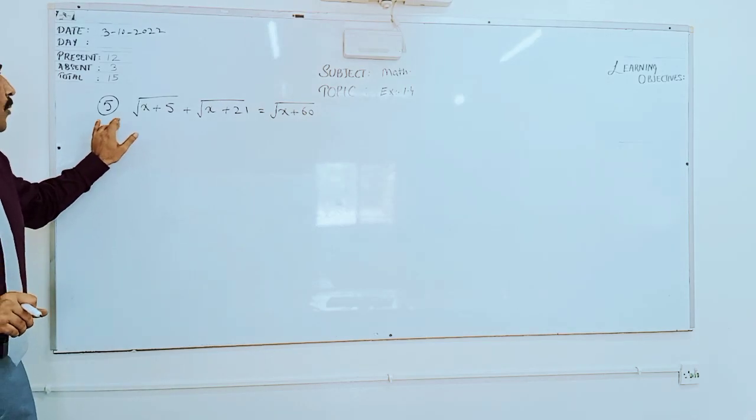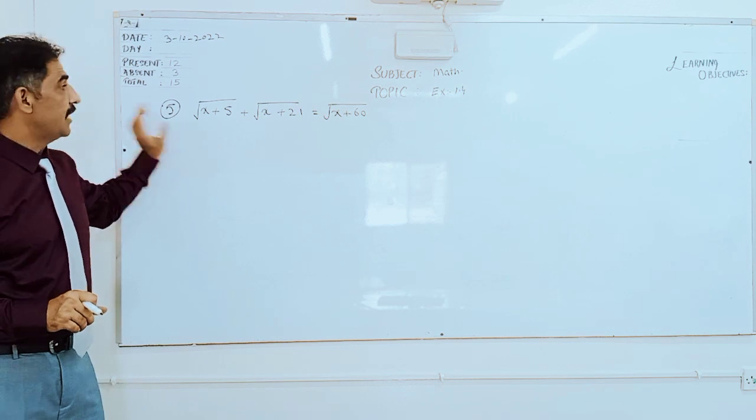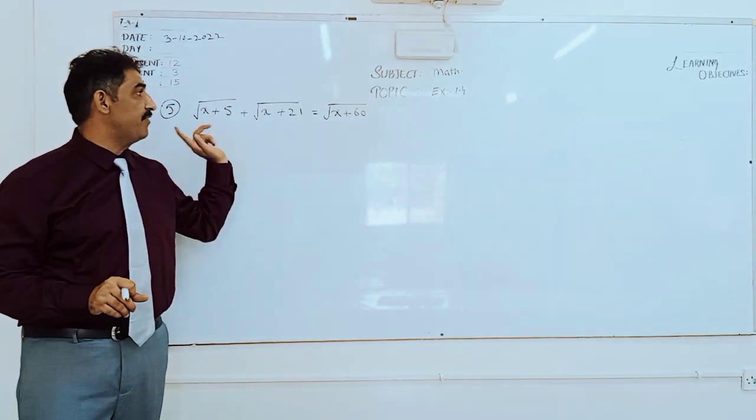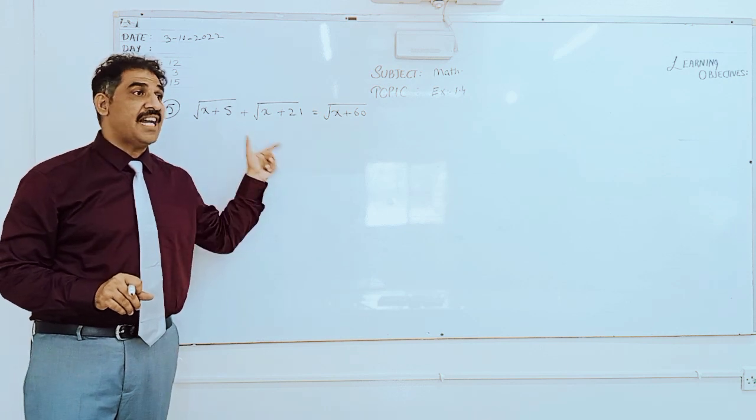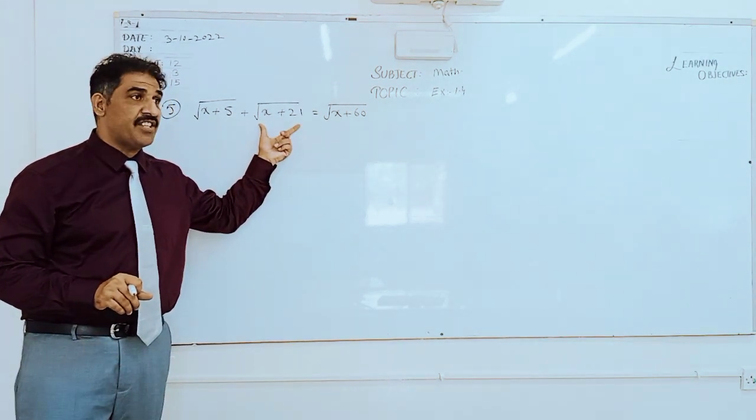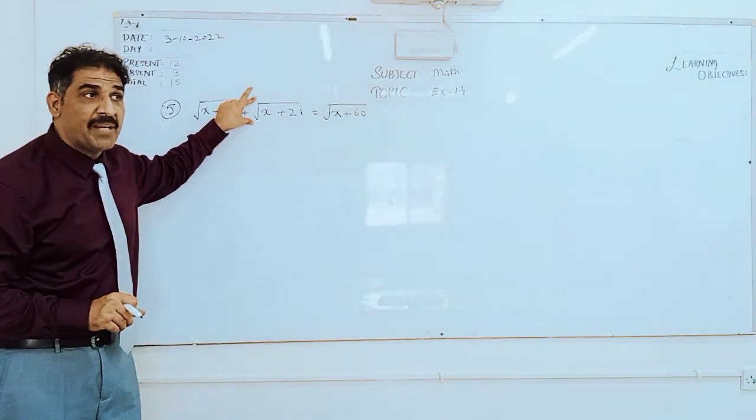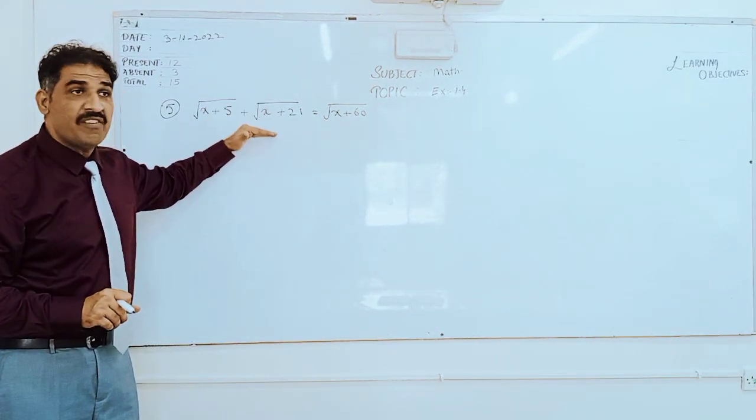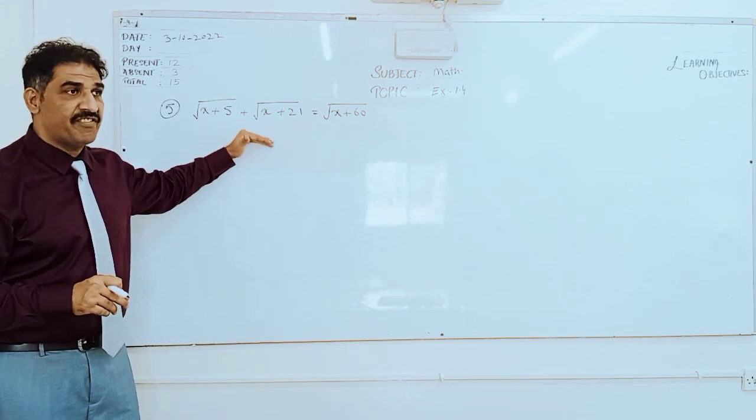Today our topic of exercise is 1.4, question number 5, Type 2. Type 2 means that there is a linear equation which is having surds. Type 1 is one linear equation having surds and one without surds. When we are solving this type, Type 1 will also come, so I will explain where Type 1 will come.